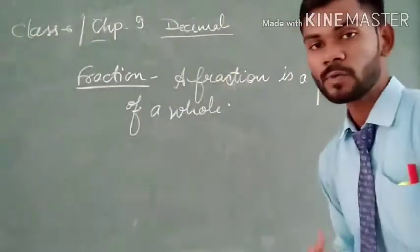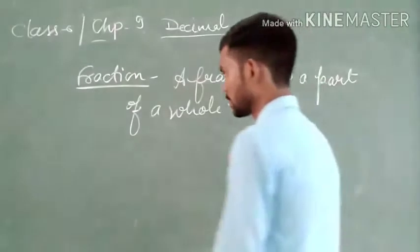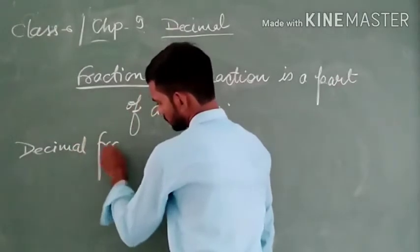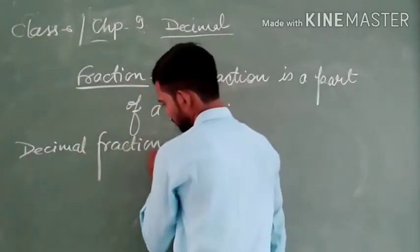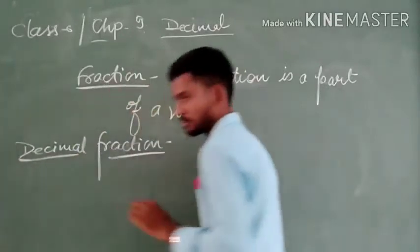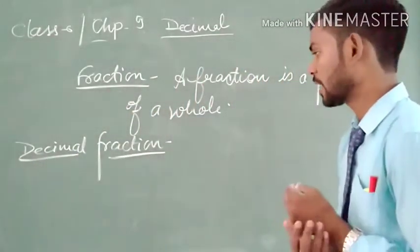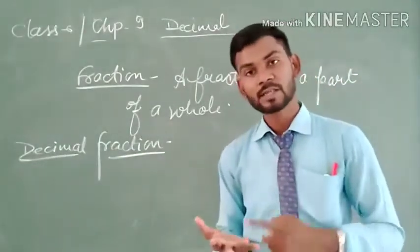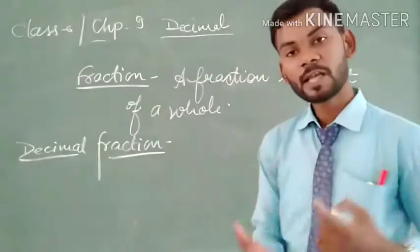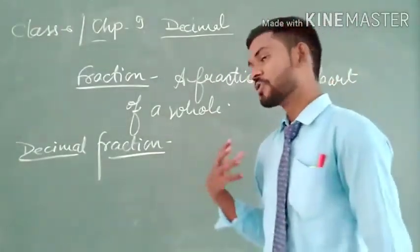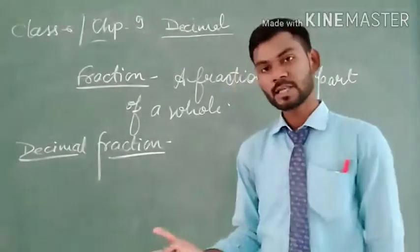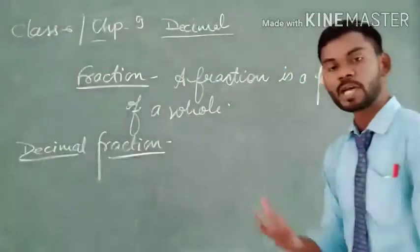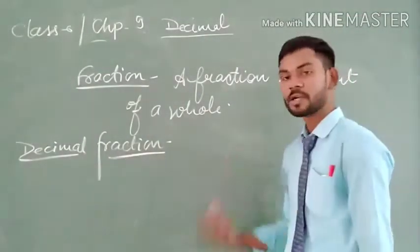But if I write a new word before fraction — like 'decimal fraction' — what type of fraction is this? You will say that we study about proper fraction, improper fraction, mixed fraction, like fraction, unlike fraction. But here you will say which type of fraction is this? This is a new type of fraction, and this type of fraction is called decimal fraction.